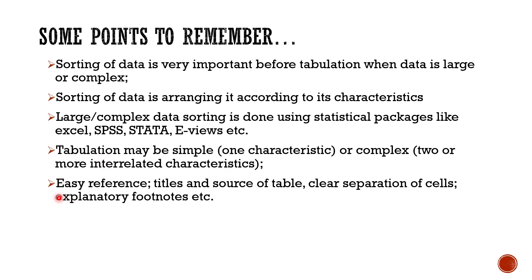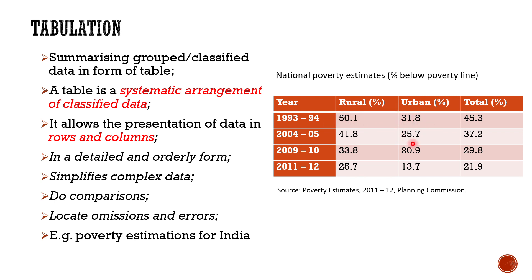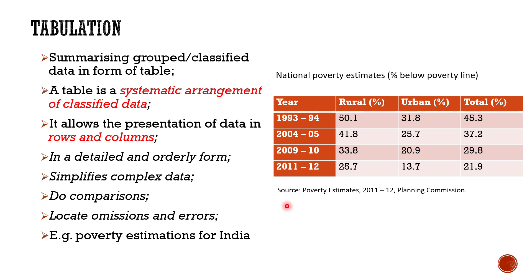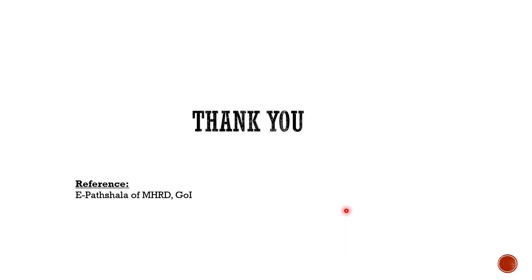Complex tabulation helps in easy referencing. When showing a table, titles and source of the table are very important. Clear separation of cells should be present to give a good first impression of the data. Finally, explanatory footnotes should be included — for example, if figures are in parentheses or if you want to indicate a significance level, a footnote can be added. Thank you so much; in the next class we'll be dealing with another topic of Statistical Methods.